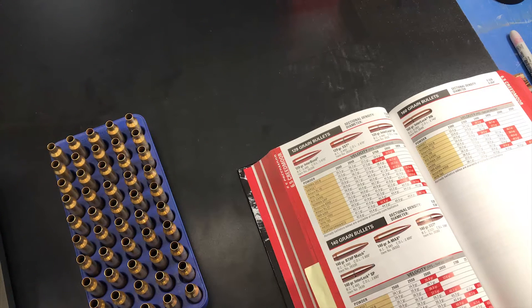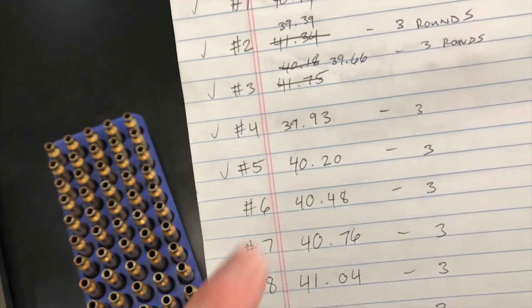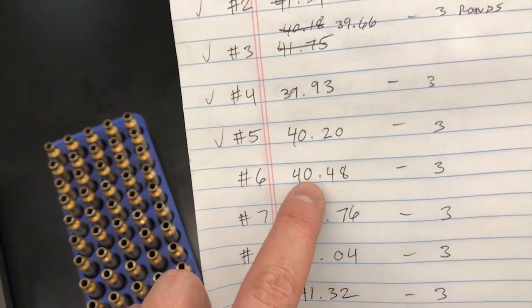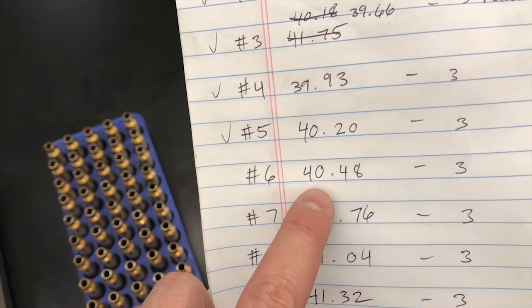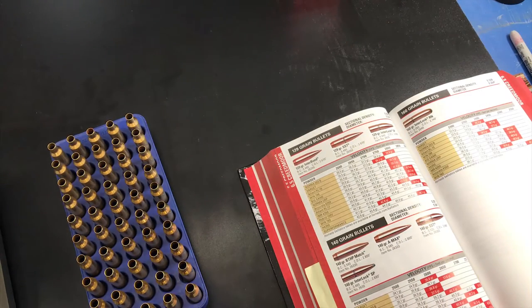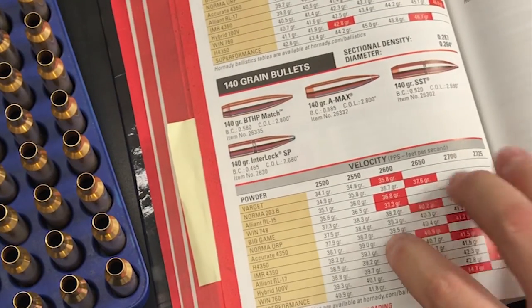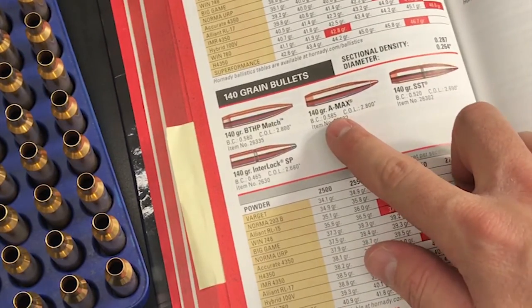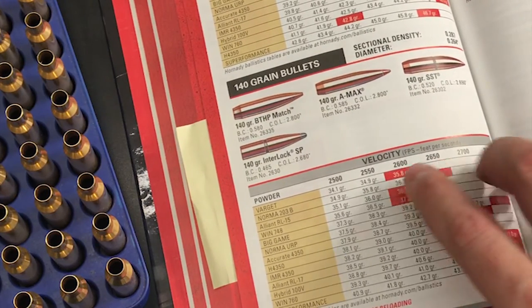Basically we know that our most accurate groups were quarter inch at a hundred yards, that's a quarter MOA group, and we're using 40.4 grains of IMR 4350. As far as I know, unless something's changed recently, the 140 grain AMAX load data in Hornady's reloading manual is still the same.